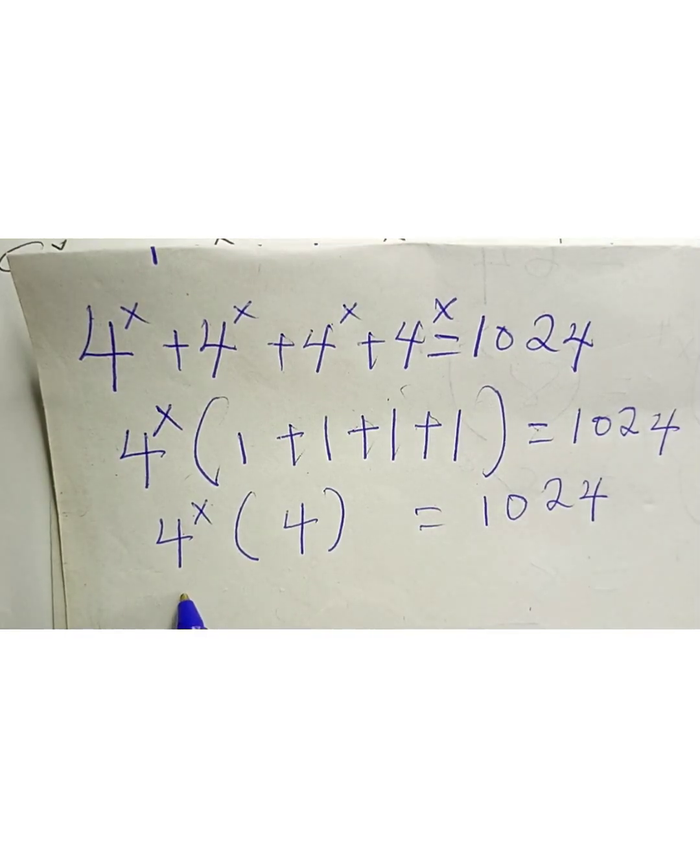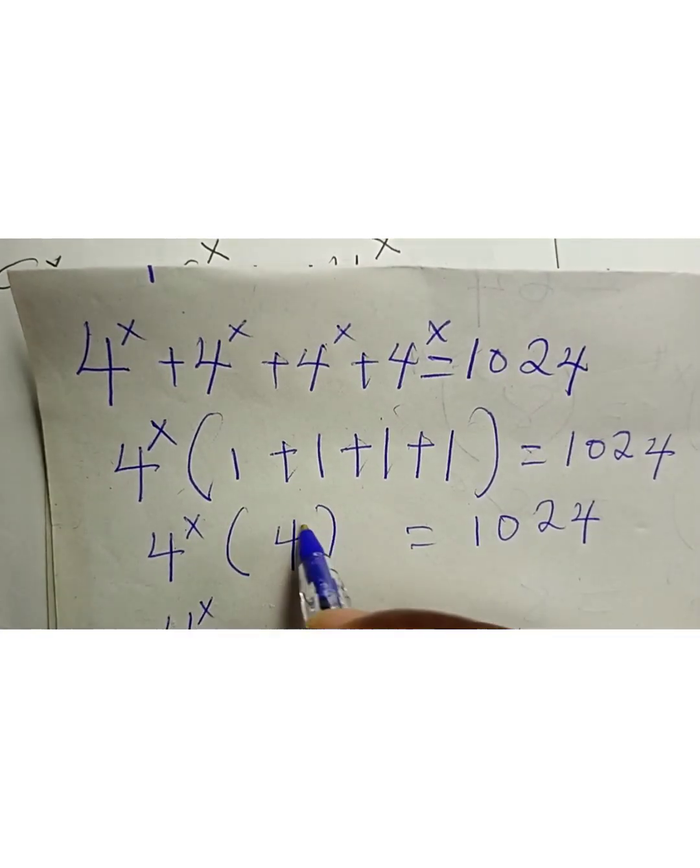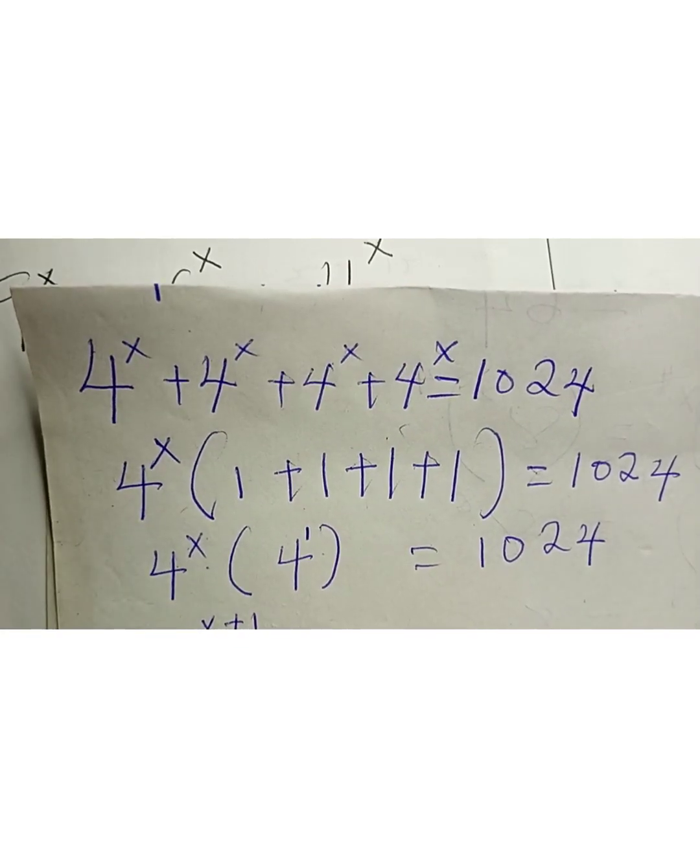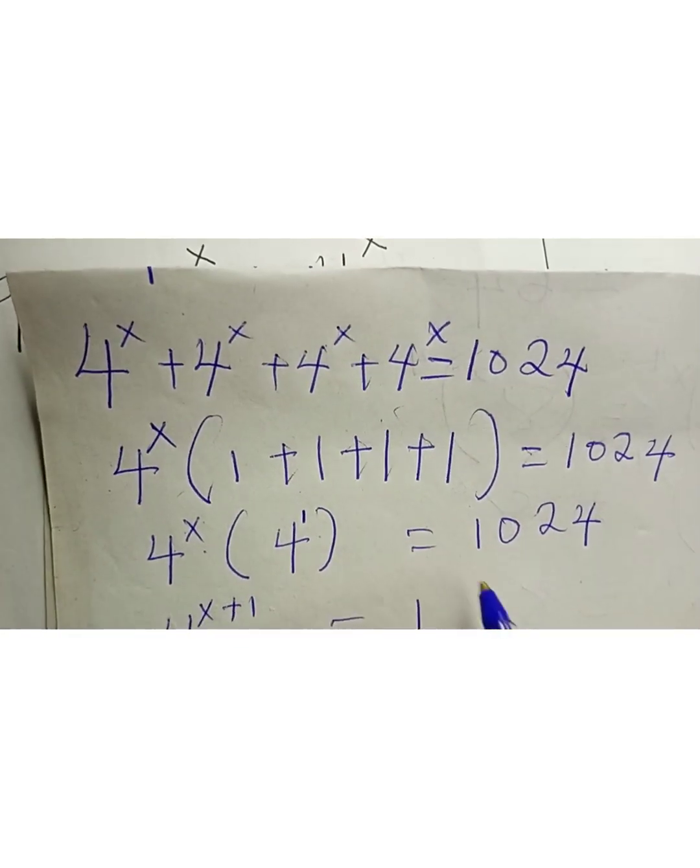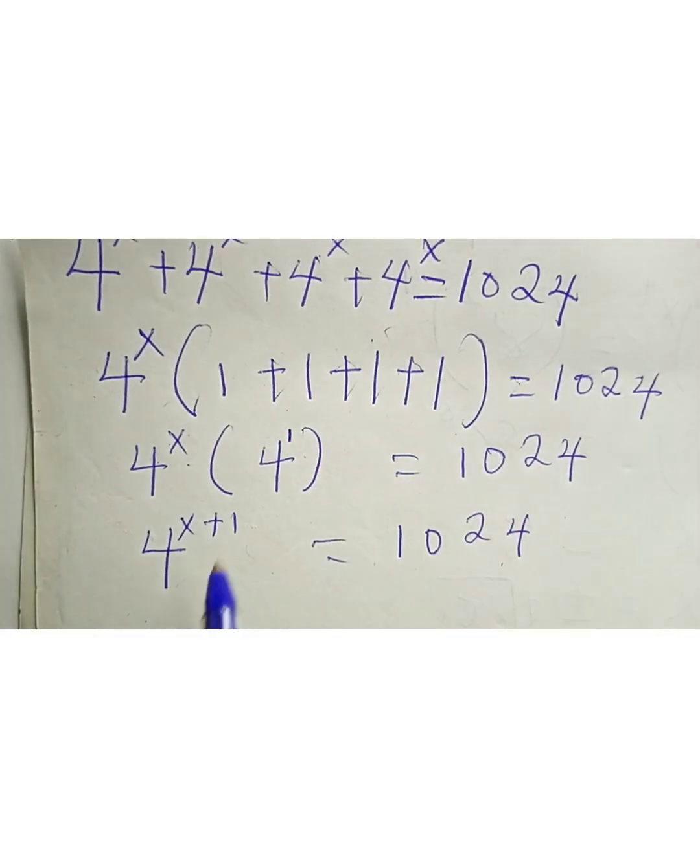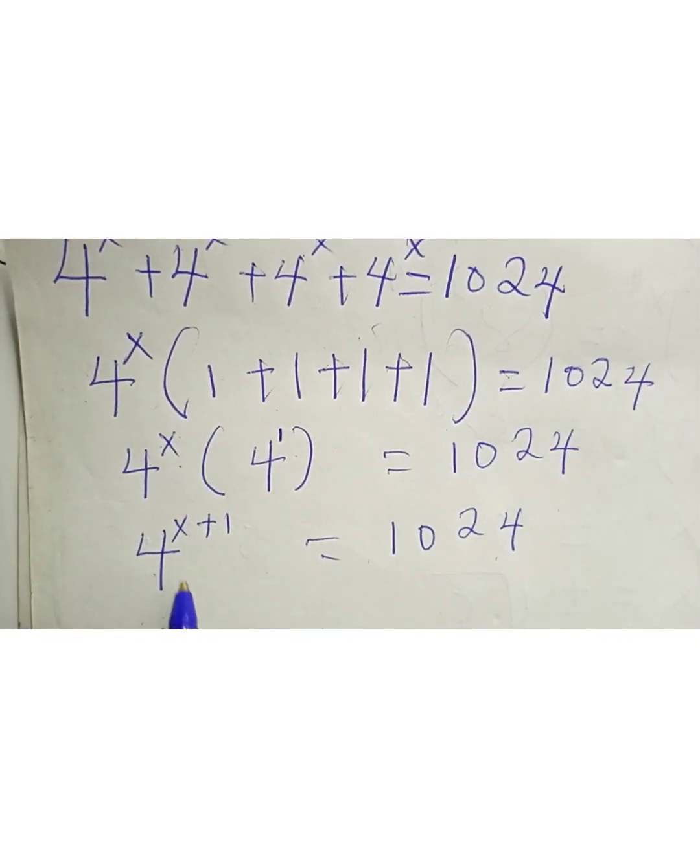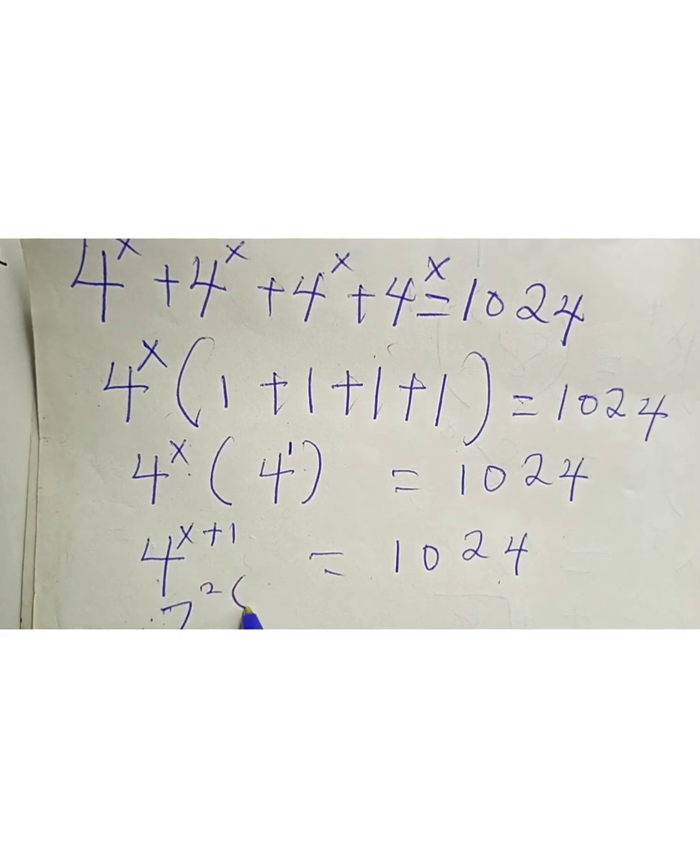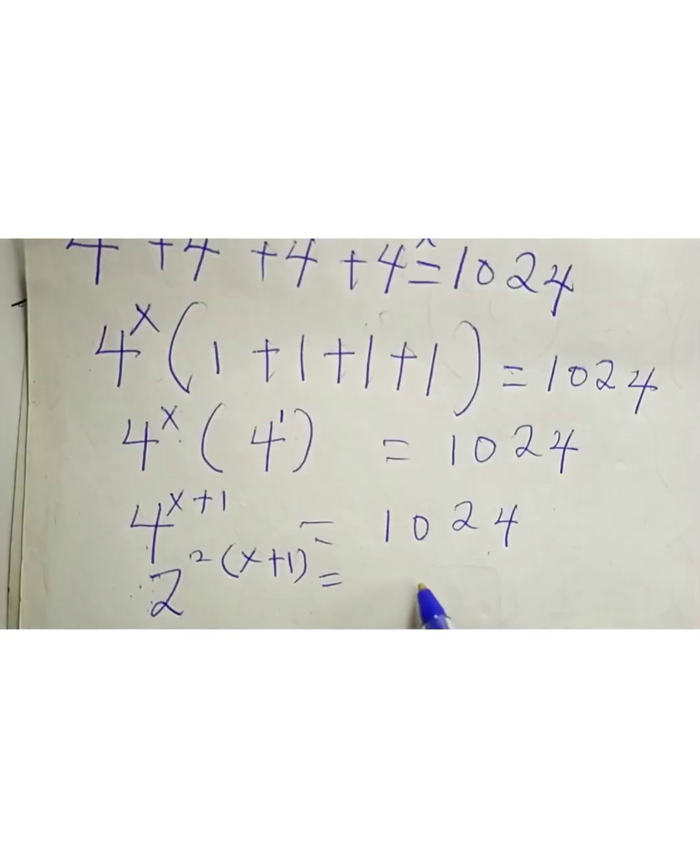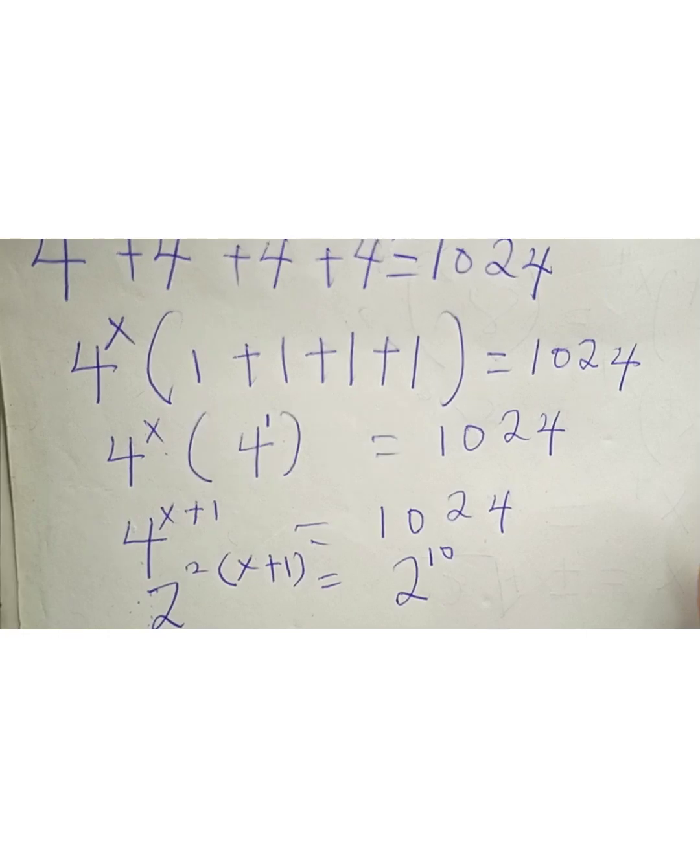Now we have 4^x, and this 4 is the same as 4^1. So we can write this as 2 raised to the power of 2(x+1) equals 2 raised to the power of 10, since 1024 equals 2^10.